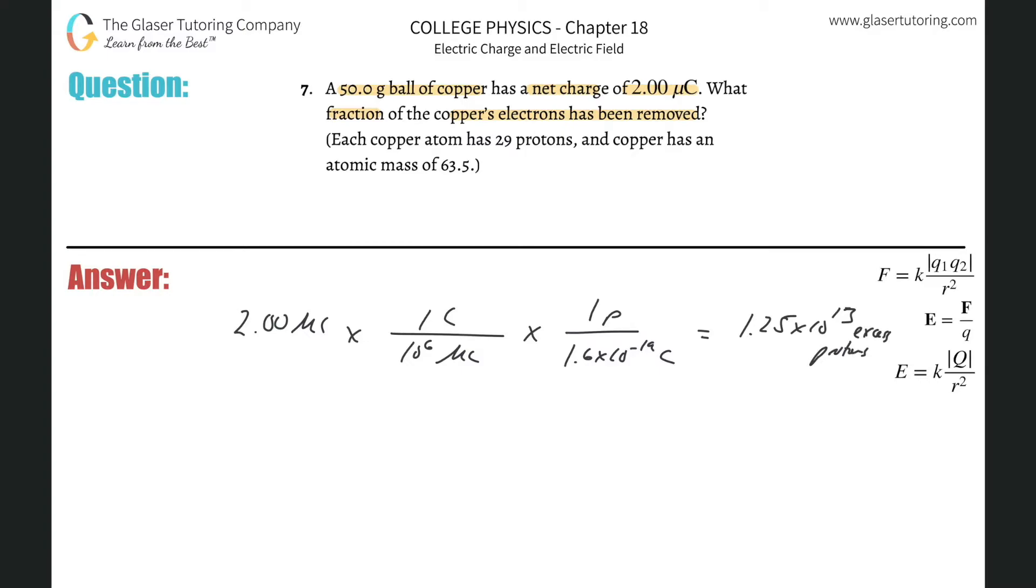Excess protons. Well, how did we get those excess protons? Well, we could have removed that same number of electrons. Same number of electrons. So we removed 1.25 times 10 to the 13th electrons.